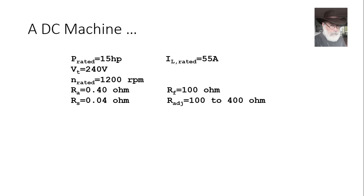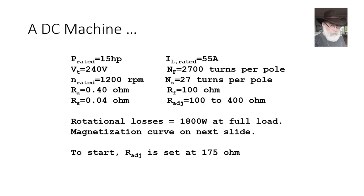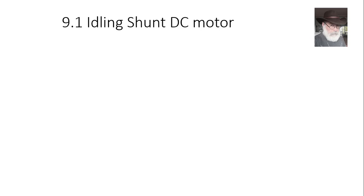The adjustable resistor in the field circuit ranges between 100 and 400 ohms. The number of turns for the field coil and the series coils are given; mechanical losses at full load are 1800 watts, assumed constant between idling and full load. The magnetization curve from the manufacturer is provided. We begin by setting the adjustable resistor to 175 ohms — that is the magnetization curve measured at 1200 RPM — and we start with a shunt DC motor that is idling.